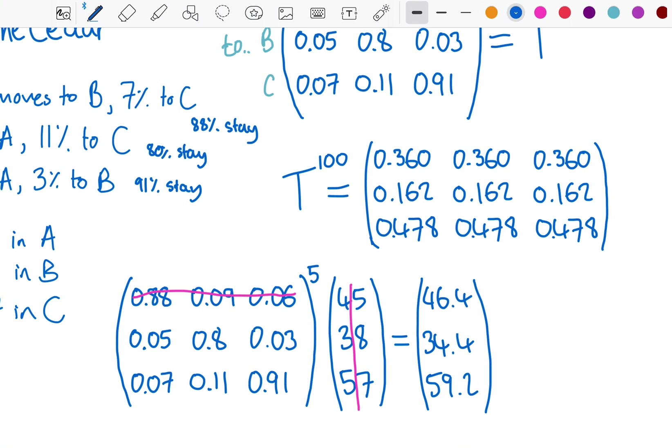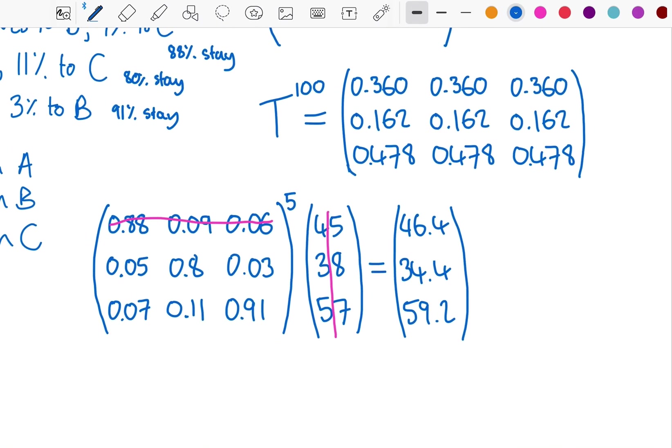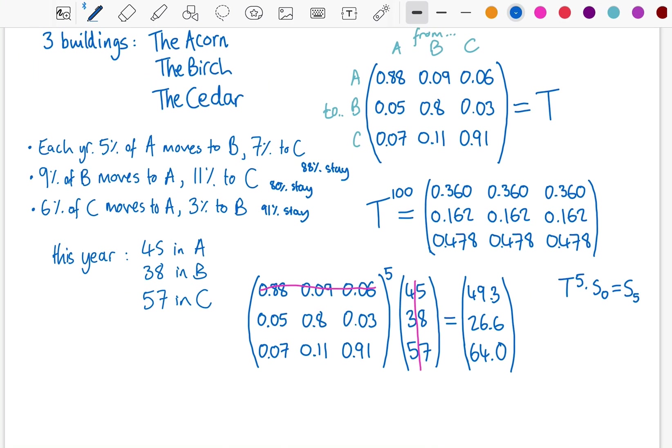So, if I want to see how many teachers will be in each building in five years, I multiply it by five. And the notation we use here is that I'm doing T to the power of five times S0, my initial state. And I'll get S5. And here I get 49.3, 26.6, 64.0. And that doesn't add up to 140 just because of rounding the decimals there. But that's fine. And, you know, if we're talking about people and the question was how many would you expect to be in the acorn in five years time, then we would say 49. We would round to an integer number of people, obviously.